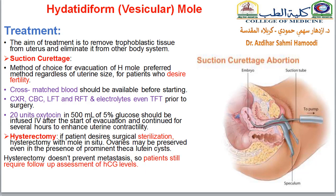The other treatment option is hysterectomy, especially when the patient is older and does not want to be pregnant again. If she has completed her family and prefers surgical sterilization — that is, tubal ligation — you can do hysterectomy with the mole in situ. Ovaries may be preserved even in the presence of prominent theca lutein cysts, because the female needs her hormones. However, hysterectomy does not prevent metastasis, so follow-up with assessment of beta-hCG levels must be continued the same way.